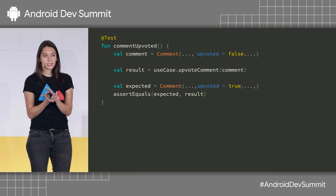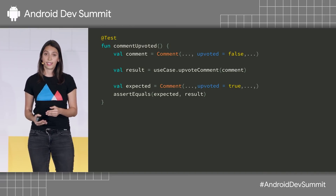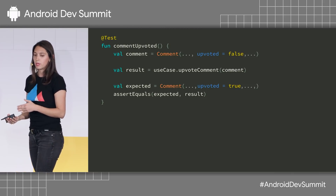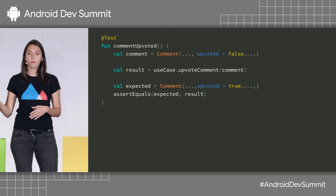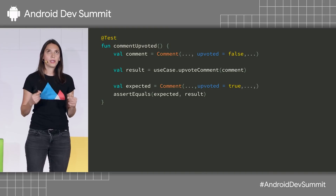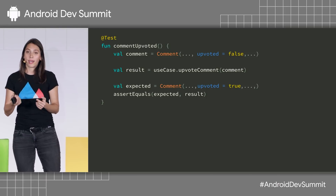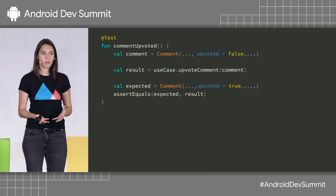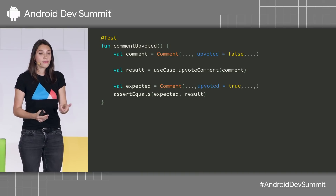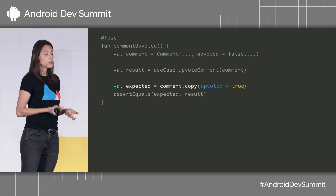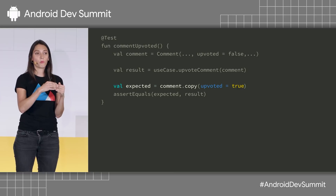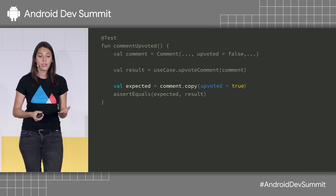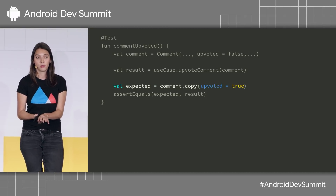What I like about data classes is the fact that they're value objects, and this really shines when used in tests. For example, we had an upvote flag in the comment. When building a test to check whether a comment is upvoted, we'd create a comment with the upvoted flag set to false, upvote the comment, and then check whether the expected result matches the initial comment but with the upvoted flag set to true. Because the comment has so many fields, it was easy to make mistakes and miss what's actually important. With Kotlin, you can use the copy method — just create a copy of the object with only the flag you're changing. The code ends up being more concise, readable, and comprehensible.